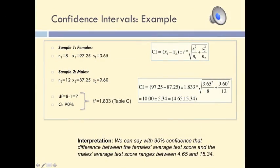If we want to compute a confidence interval by hand, all we need to know is the size of the two samples and the mean and standard deviation for each group. The degrees of freedom will be equal to 7, because our smallest group has 8 individuals and if we subtract 1 from 8 we get 7. For a 90% confidence level and 7 degrees of freedom, the value of T-star is 1.833. This value comes from table C. If we replace all these values in the formula for the confidence interval, we obtain a lower limit of 4.65 and an upper limit of 15.34. These values are very close to the ones provided by SPSS.